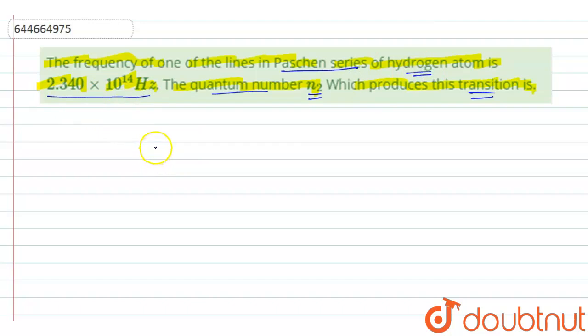So F = 2.34 × 10^14 Hz. Now we know that the relation in Paschen series is given as 1/λ = Rz² × (1/n1² - 1/n2²), and also we have C = λ × F, where F is the frequency. So from here we can find the value of 1/λ = C/F, where C is the speed of light.